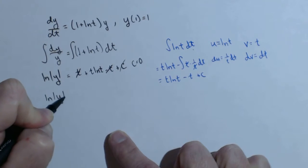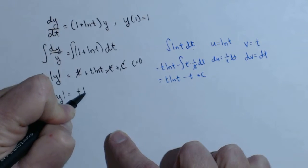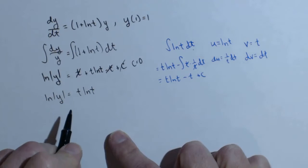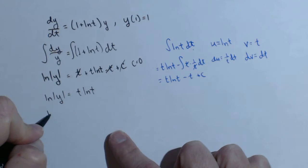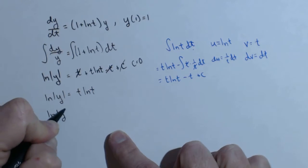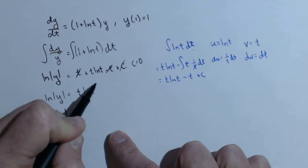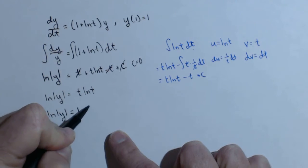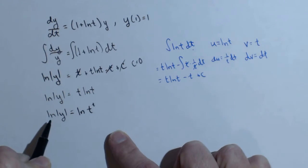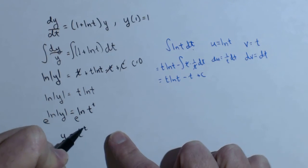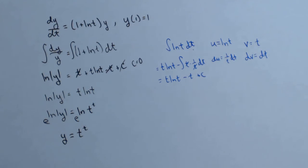So we don't even have to worry about the c. So we have ln of y equals t ln of t. And we're going to employ a property of logs here to help us solve this. What we're going to do is this can become the exponent of what we're taking the natural log of. So we get natural log of t to the t. So we can make both sides exponents of e, and we get y equals t to the t for our solution.